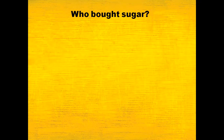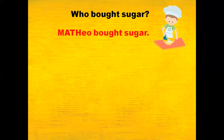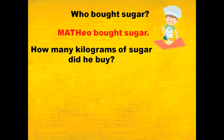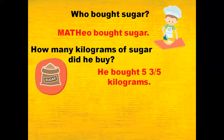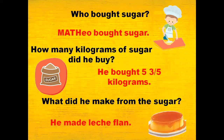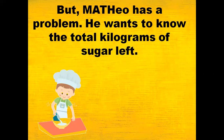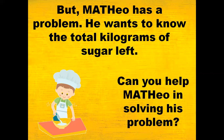First question: who bought sugar? Mateo bought sugar. But how many kilograms of sugar did he buy? He bought five and three-fifths kilograms. What did he make from the sugar? He made leche flan. Now, Mateo has a problem — he wants to know the total kilograms of sugar left. Can you help Mateo in solving his problem? Let's help Mateo solve his problem.